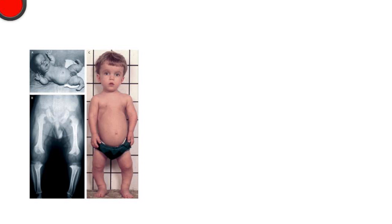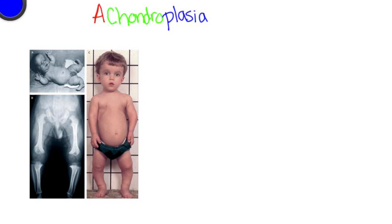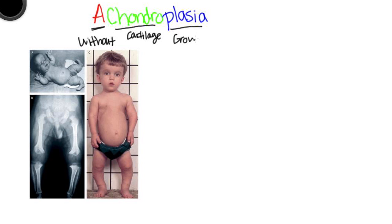Achondroplasia. What is achondroplasia? 'A' means without, 'chondro' refers to cartilage, and 'plasia' means growth. So this is basically impaired cartilage growth or proliferation.